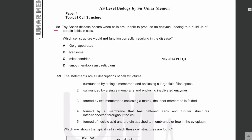MCQ number 58: Tay-Sachs disease occurs when cells are unable to produce an enzyme, leading to a buildup of certain lipids in cells. Which cell structure would not function correctly resulting in the disease? Cells cannot produce an enzyme, and the absence of this enzyme causes lipid buildup — most likely the enzyme normally breaks down lipids.